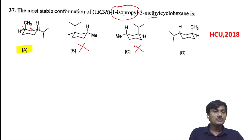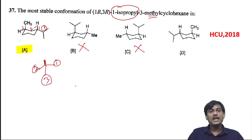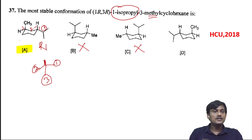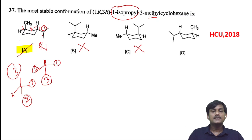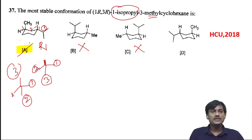Taking the priorities: this one gets first priority, the next gets second priority. With hydrogen above the plane and getting anti-clockwise, the configuration is R — so 1R. For the other carbon, hydrogen is below the plane, the direction is clockwise, so the configuration is also R. The correct answer is A: isopropyl at equatorial position with R,R configuration.